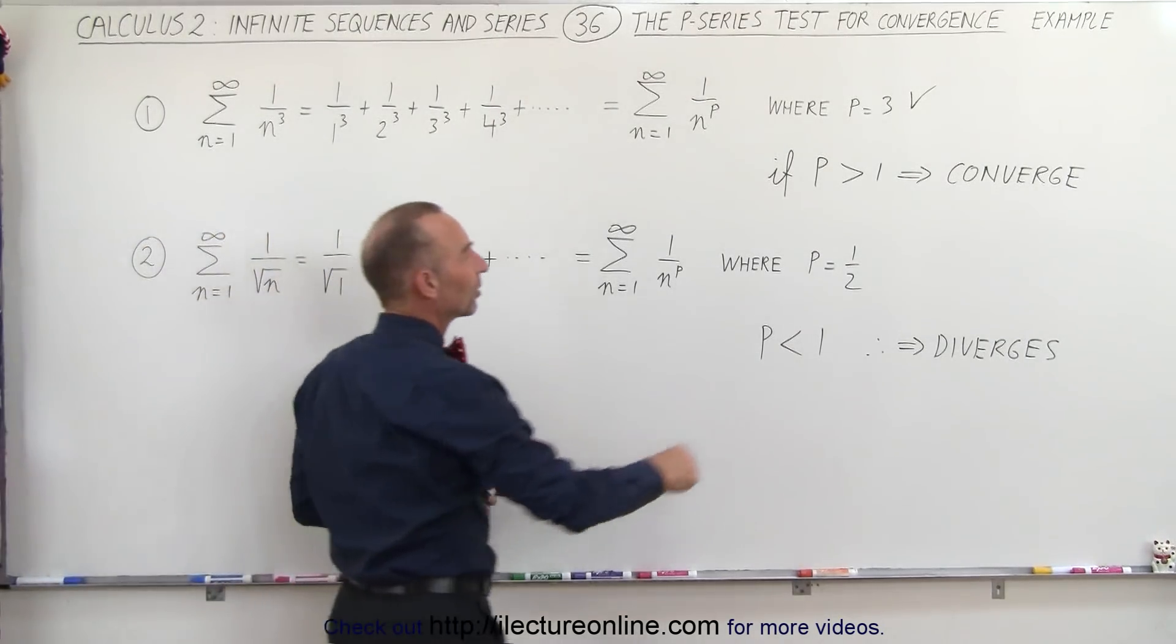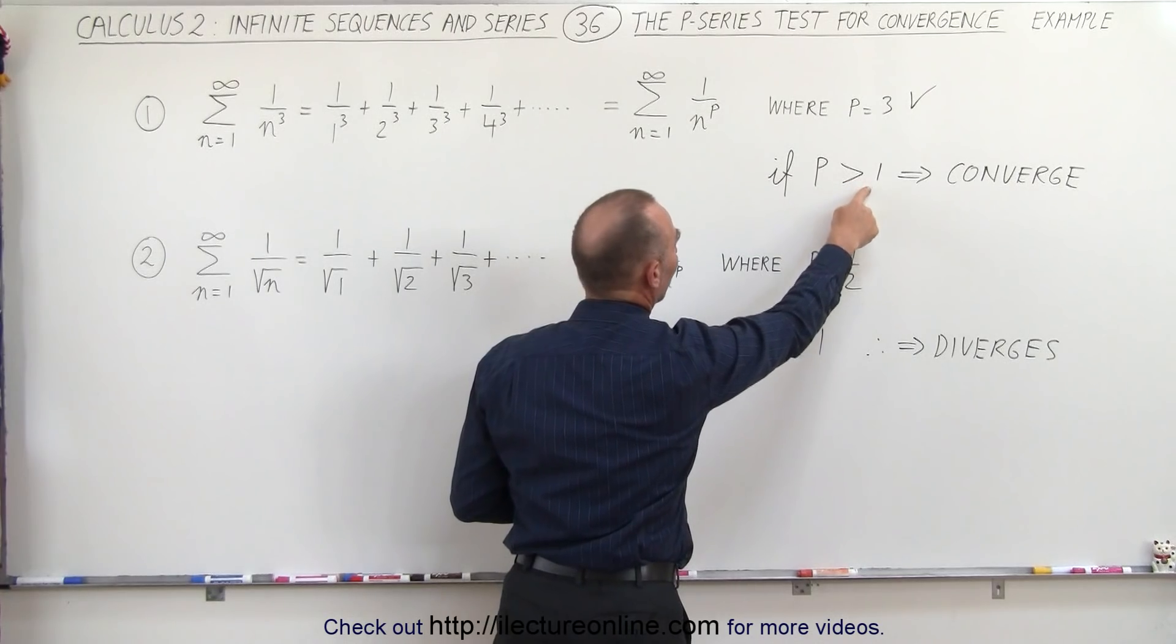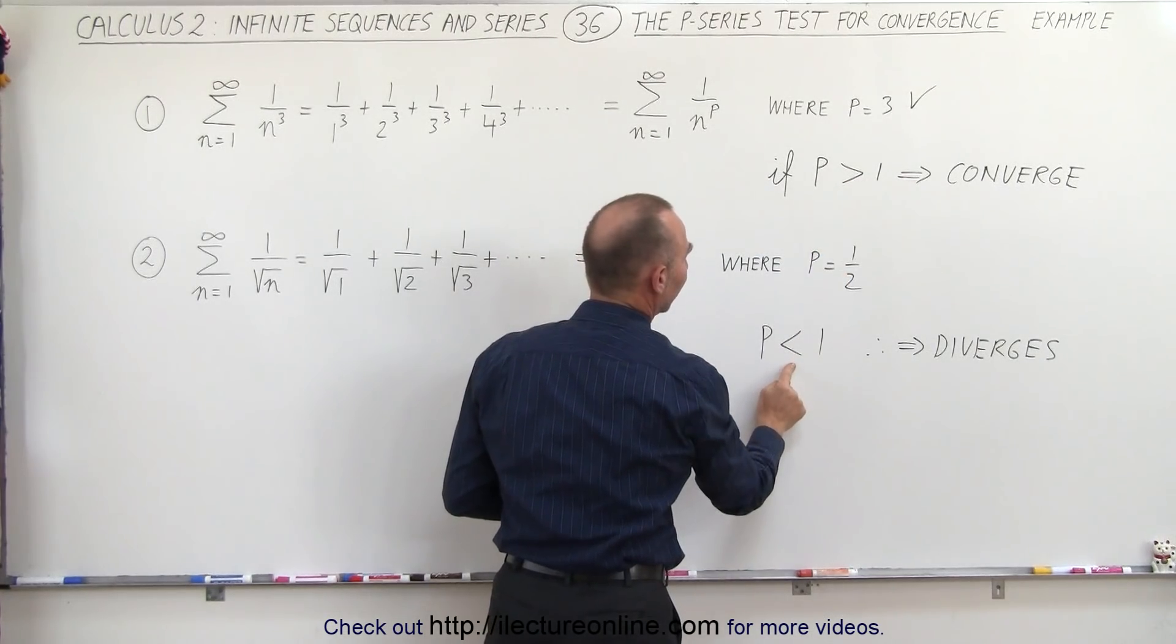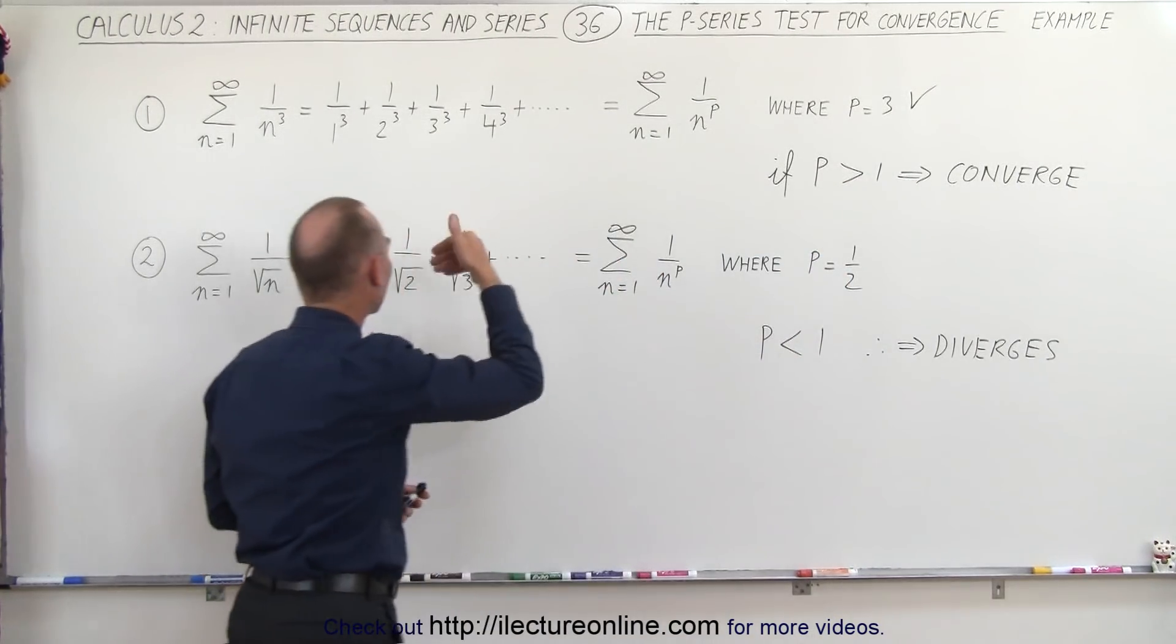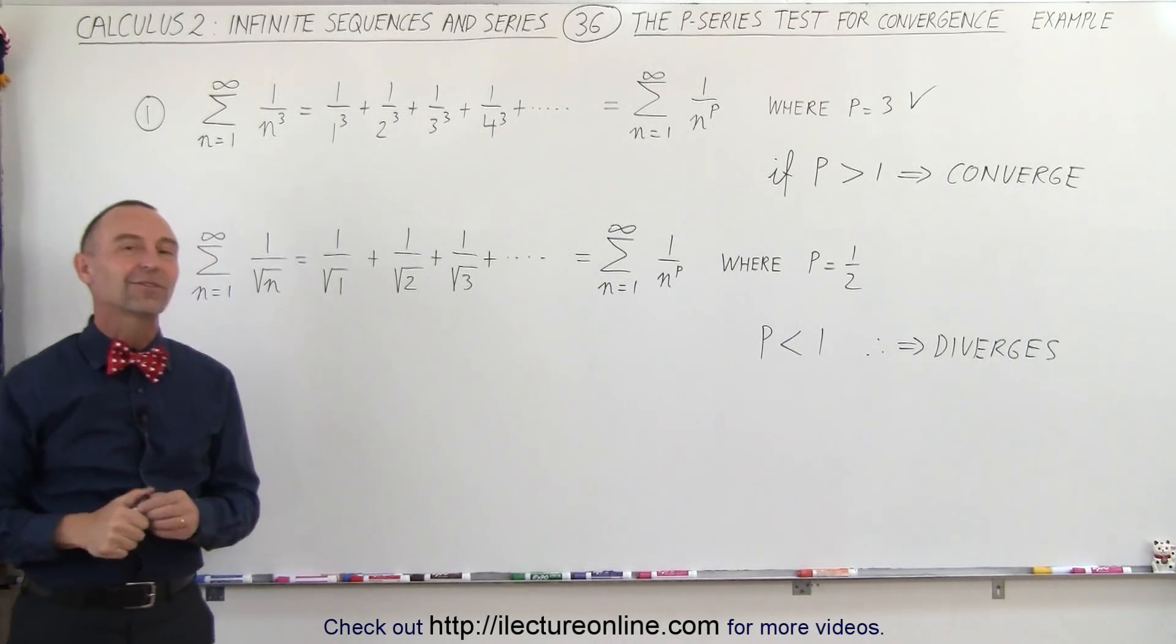The way to know for sure is to check to see the value for p. If it's greater than 1, it converges. If it's less than 1, it diverges. And so here you have two nice examples to exemplify that.